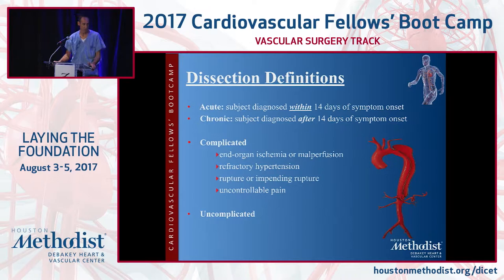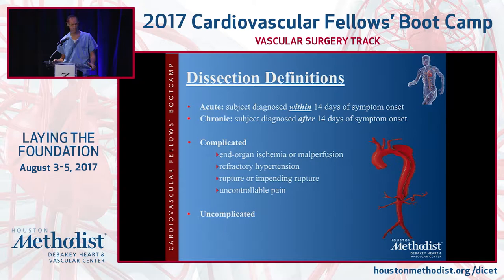For a complicated dissection — we're going to talk about this several times throughout the talk — essentially end-organ ischemia or malperfusion, refractory hypertension, rupture, impending rupture, and uncontrolled pain. And then, of course, there are complicated versus uncomplicated dissections.